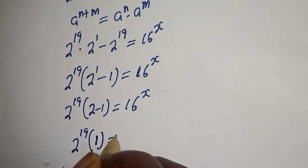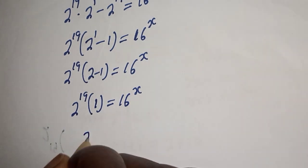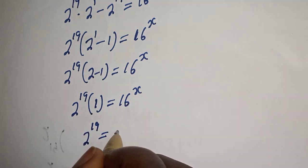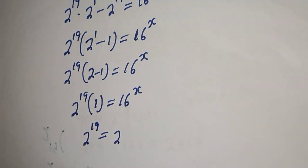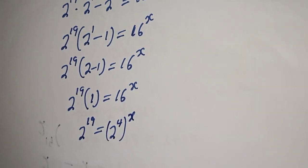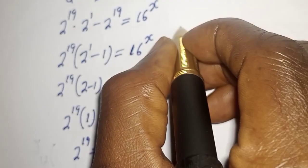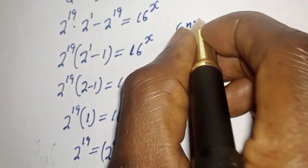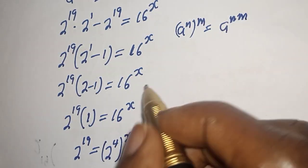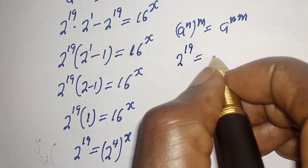So we have 2 raised to power 19 multiplied by 1 is equal to 16 raised to power x. Now 16 can be written as 2 raised to power 4, so 16 raised to power x is 2 raised to power 4 raised to power x. Take note: if you have a raised to power n, to the power of m, this equals a raised to power n times m.